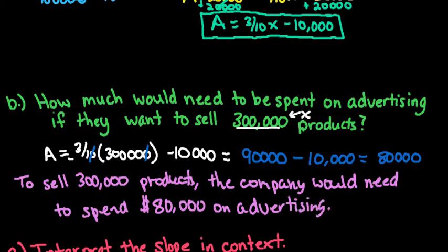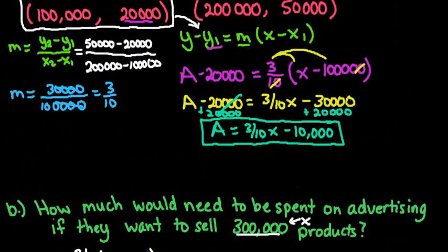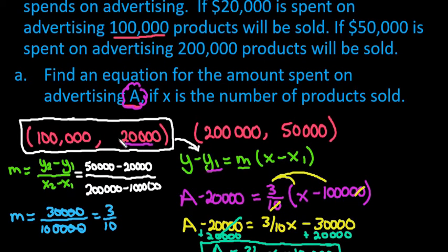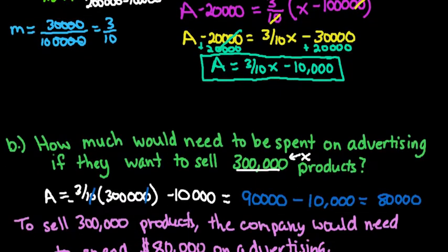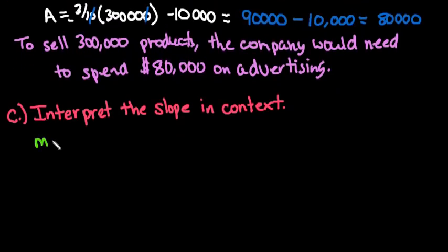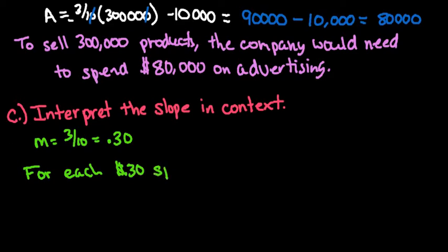The last thing that we are going to do is interpret the slope in context. So if you recall, remember that our y coordinate or the top part represents the amount spent on advertisement. So what we are going to do is look at our slope. Remember our slope is 3 over 10 or 0.30. And remember that we're talking about money. So what this would mean is for each 30 cents spent on advertising, one additional product is sold.